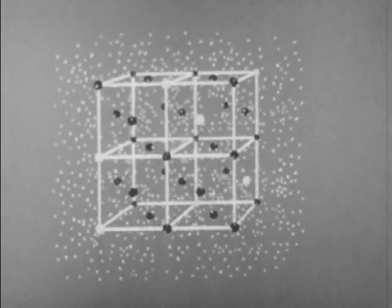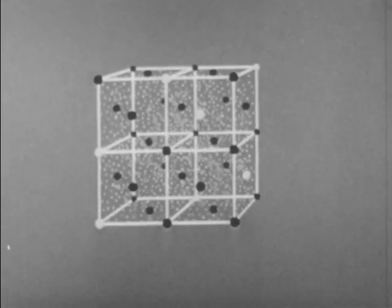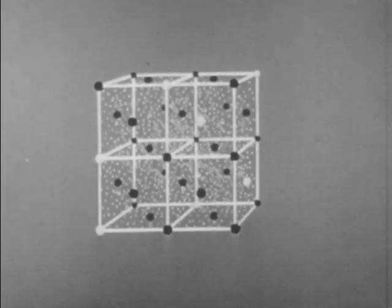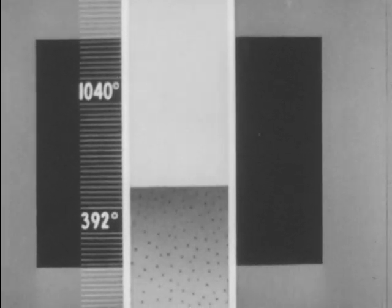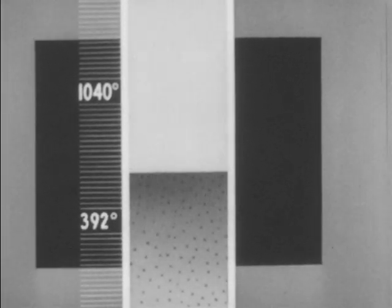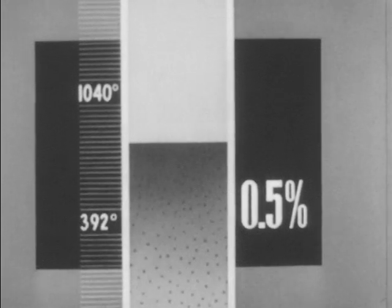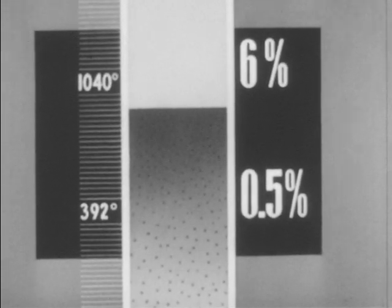In the case of alloy 24S, the compound formed by copper with aluminum is copper aluminide, or CuAl2. As temperature is increased, the alloying element becomes increasingly soluble in the solid aluminum. The solubility of copper in solid aluminum increases from 0.5% at 392 degrees Fahrenheit to 6% at 1040 degrees Fahrenheit.